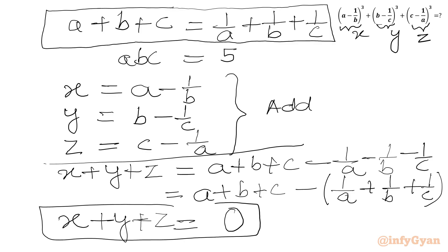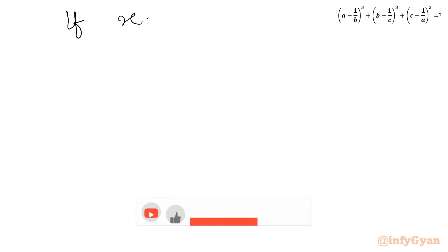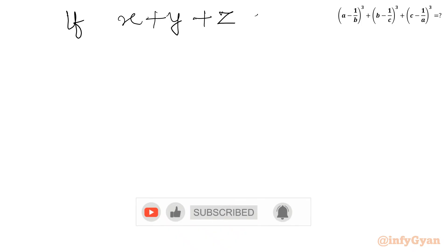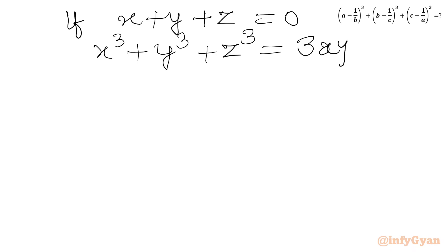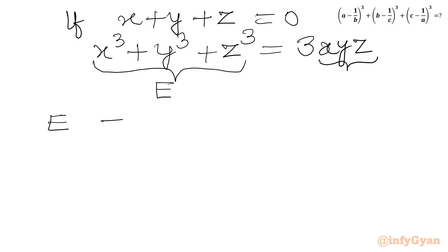Now I will use the algebraic identity which says: if x plus y plus z equals 0, then x³ plus y³ plus z³ equals 3 times the product xyz. Since x³ plus y³ plus z³ is our required expression E, we have E equals 3xyz.